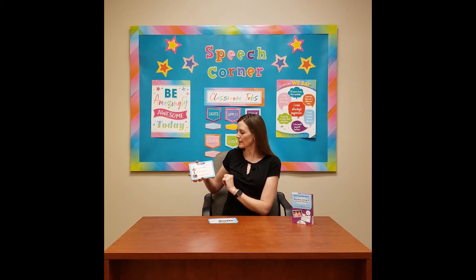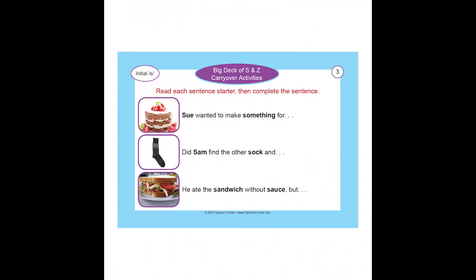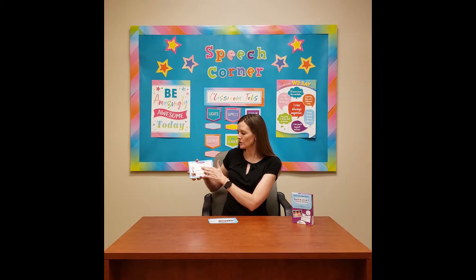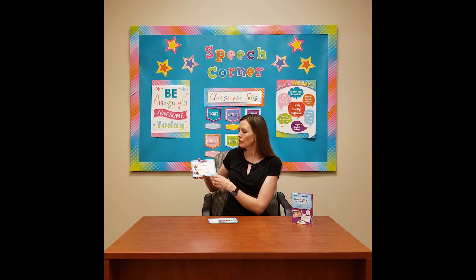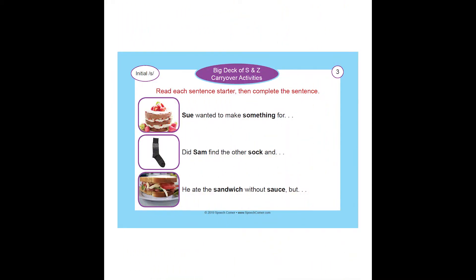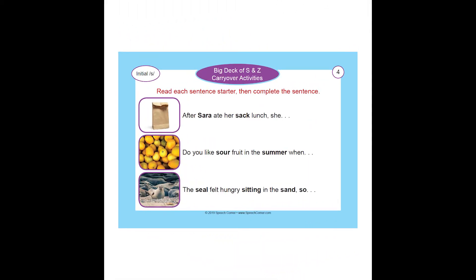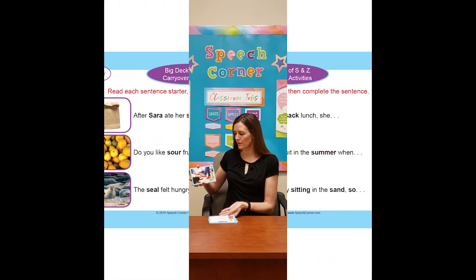The next card has you read each sentence starter, then complete the sentence. There are three pictures on it. It gives you a sentence starter with your target sound showing up in the sentence, usually at least twice, and then the student would finish the sentence. When you flip it over, you get two front and back cards with that type of activity.